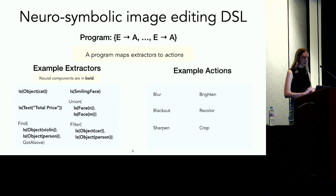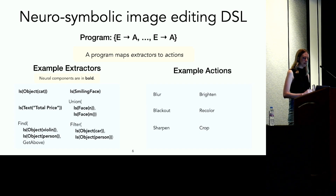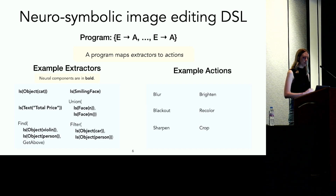Our image editing DSL expresses a broad class of image edits based on the content of an image. At the highest level, a program is comprised of a set of pairs of extractors and actions. Actions are image edits like blur, brighten, and crop. Extractors specify what part of the image to apply that action to. Extractors are defined recursively. The base case extractor is the is-phi operator that returns all objects in an image for which the predicate phi evaluates to true. For instance, the extractor is-object cat will return all the cat objects in an image. These operators are implemented using a neural object detector and encompass all objects and properties that this detector can identify.